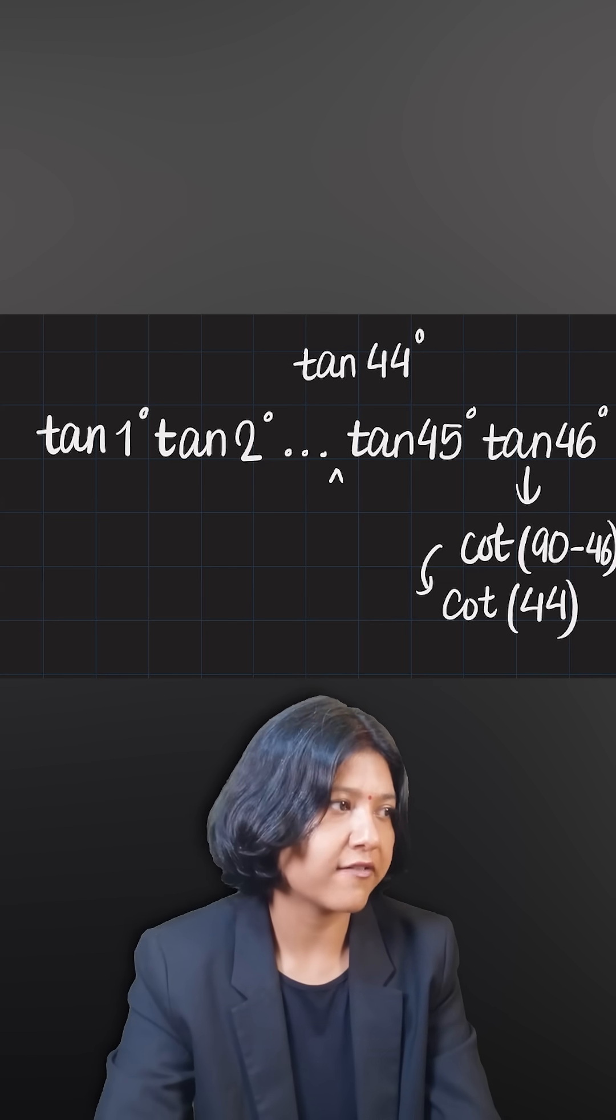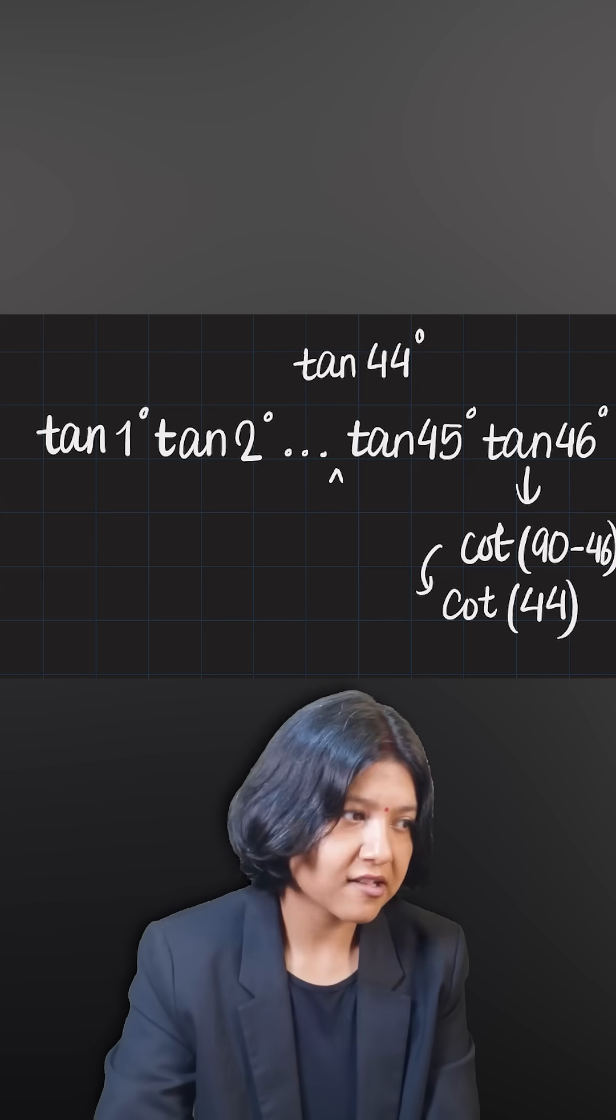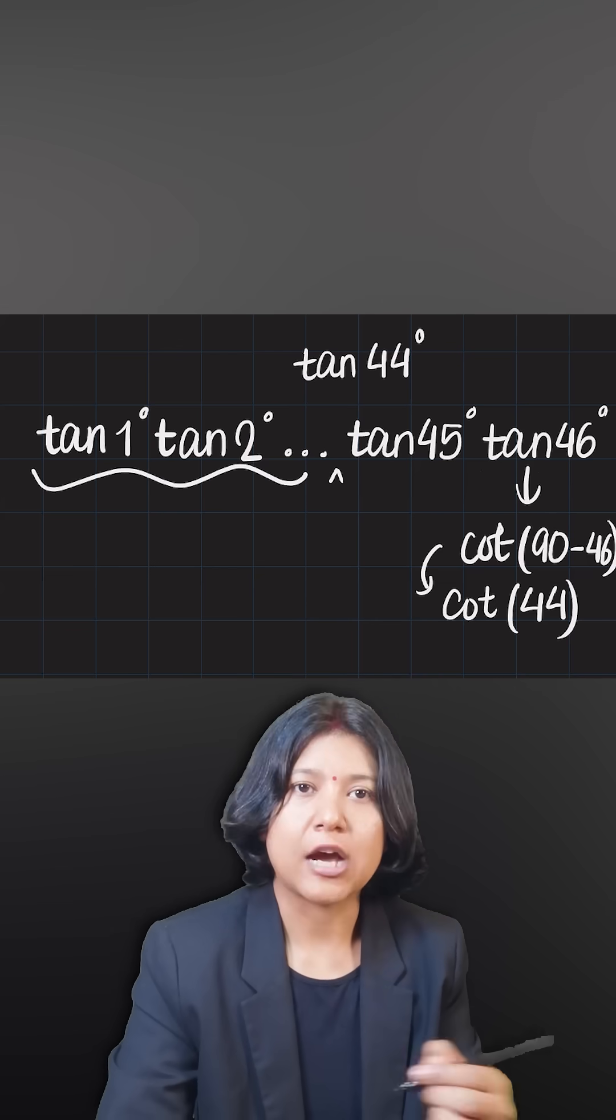So this way, what you'll have is for every value that you have after tan 45, you can convert them into cot like this, and you'll end up getting the same values as you had before, but now in terms of cot.